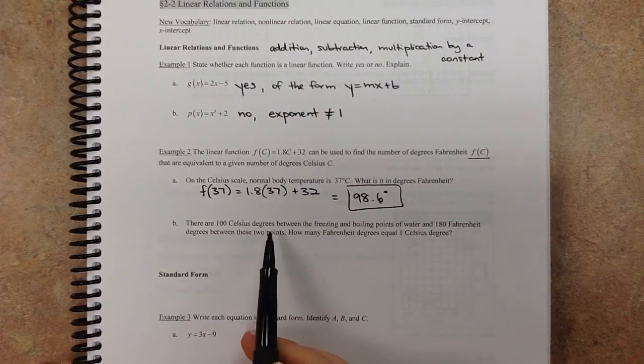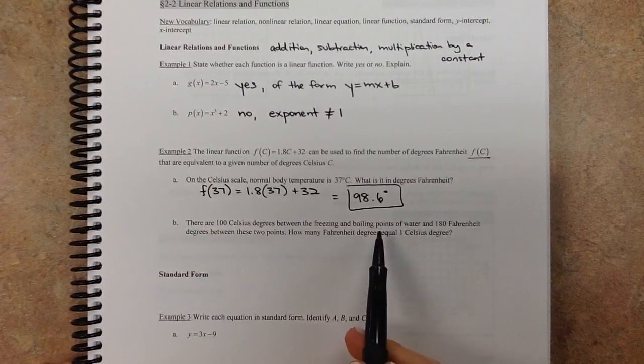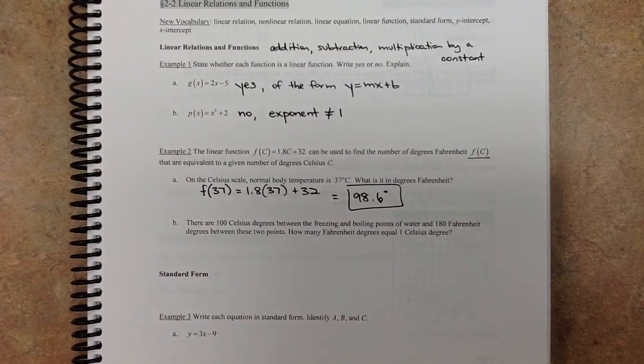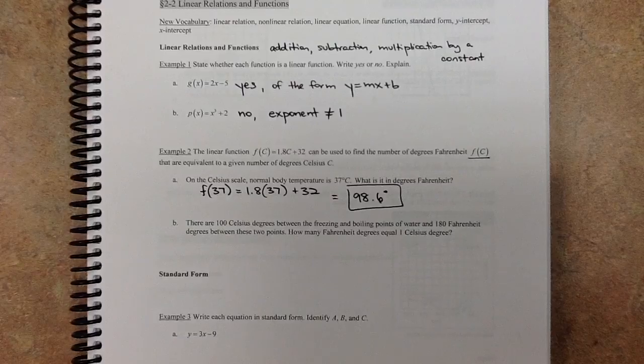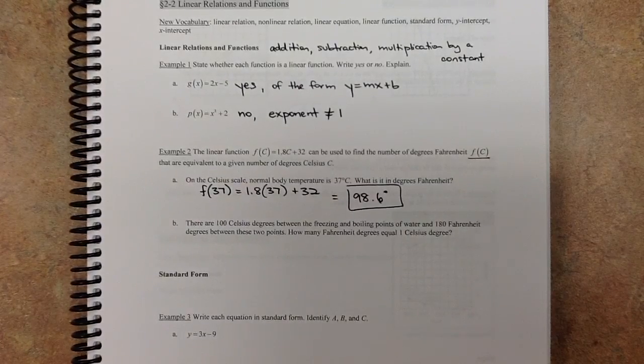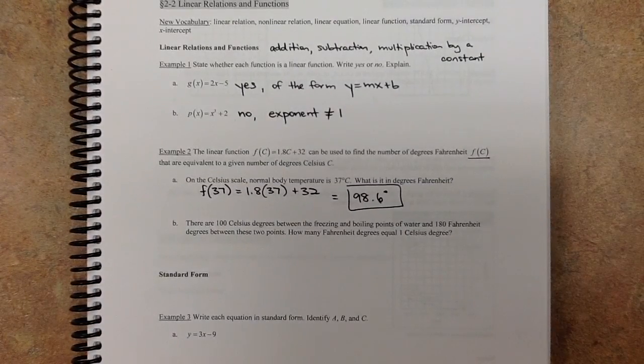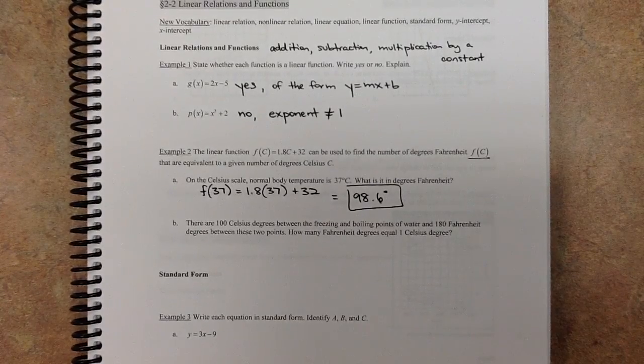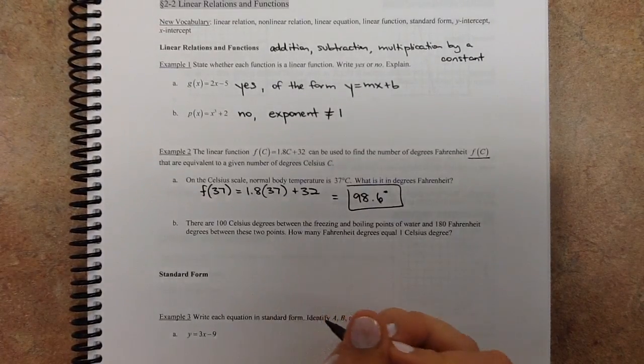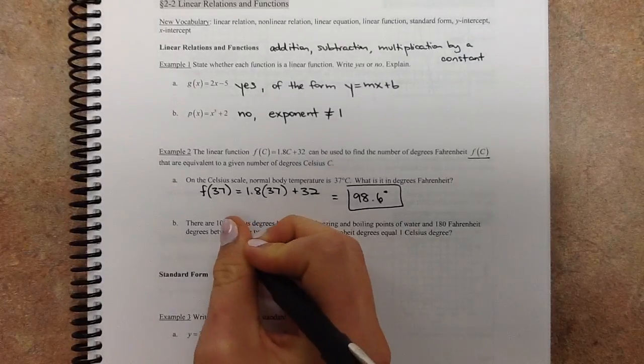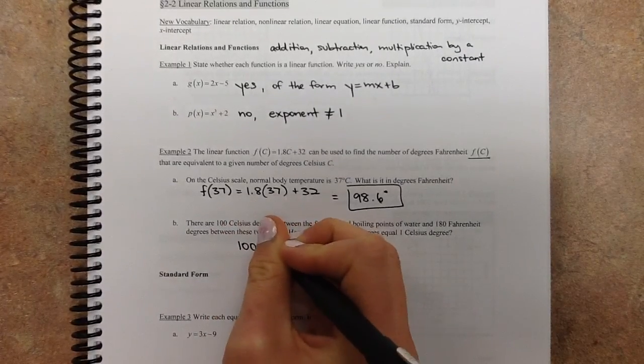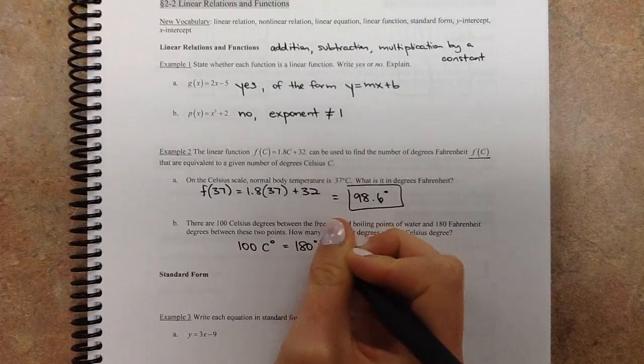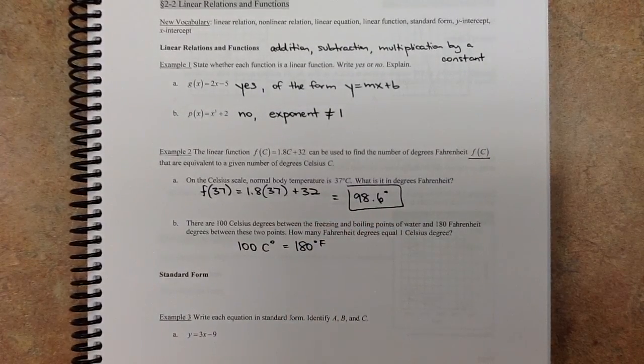Next. There are 100 Celsius degrees between freezing and boiling points and 180 Fahrenheit degrees between those two points. How many Fahrenheit degrees equals 1 Celsius degree? So basically what we're going to do with this, you're going to set up kind of a proportion. So if you know that this is true, you can say something like, 100 Celsius degrees is equivalent to 180 Fahrenheit degrees.